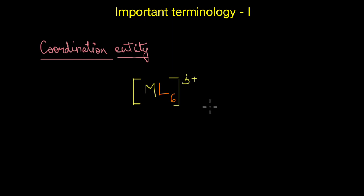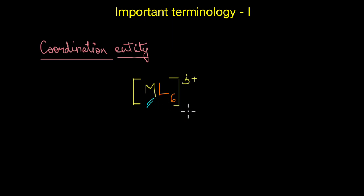Let's first talk about coordination entity. A coordination entity consists of a central metal atom or an ion that is bonded to a fixed number of ions or molecules. The coordination entity is enclosed within brackets, as you can see here.